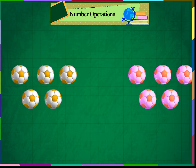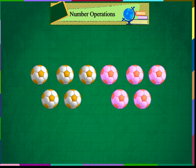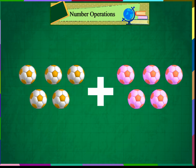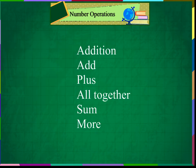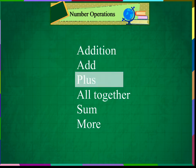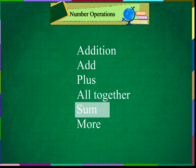Addition means combining two groups of objects. When we put things together, we say we are adding things. We use the plus sign and say it as 'plus.' The combined total is called the sum. We use different words for addition in maths: addition, add, plus, altogether, sum, more.